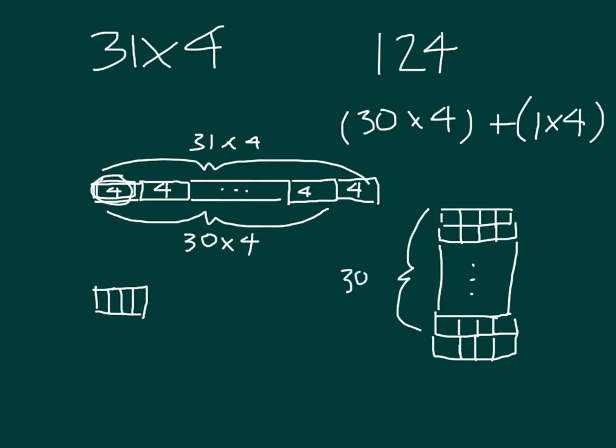Where it is that we have 30 times 4, that area model, there are so many boxes within that drawing there. So let's represent all of those boxes using an area model. That's a little bit more simplistic, a little bit more simple, easier to see. So we've got that 4 there. This would be 1, and this here would be 30.